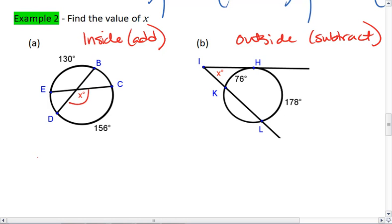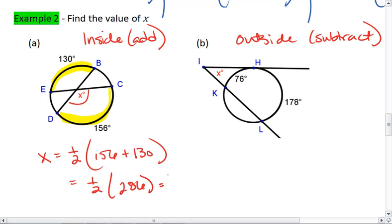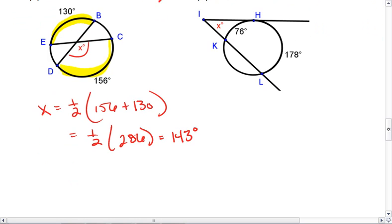In this first one, we know that x is going to be one-half of our two intercepted arcs. So we take 156 plus 130. We're one-half of 286, which is going to be 143 degrees. So in this first example, x equals 143 degrees.